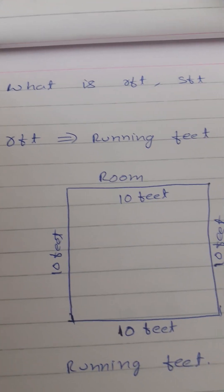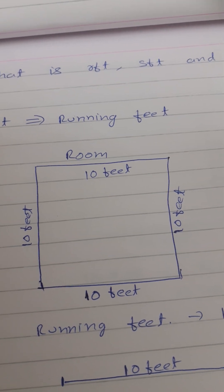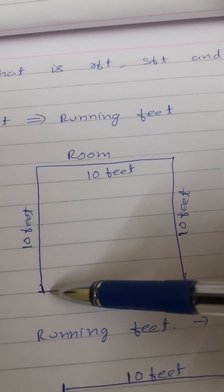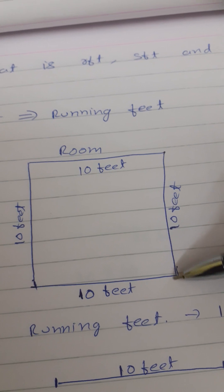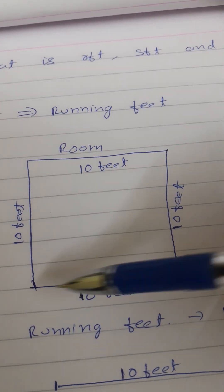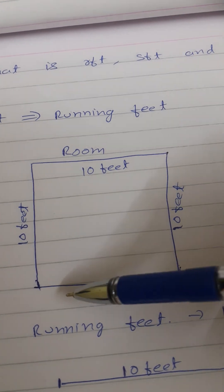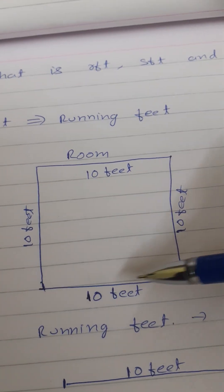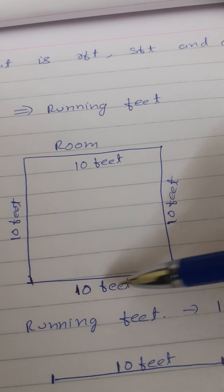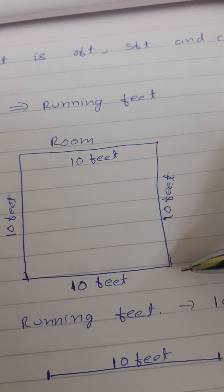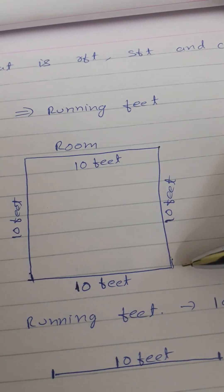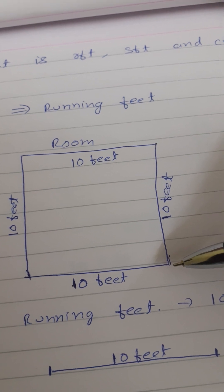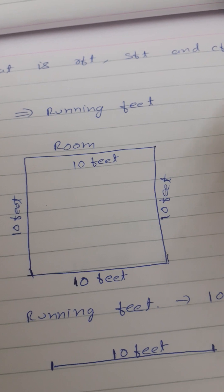First, coming to running feet — what is running feet in civil calculations? If we have to measure something from one point to another point, like take for example this room, I want the distance from this end to the other end. If I take a measurement tape and calculate from this place to this place, the number that appears on the tape — for example, 10 feet — so this 10 feet is the running feet. That means from one place to the other place, if I am measuring and calculating the distance, that is called running feet.